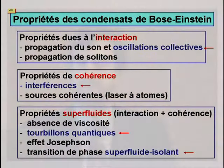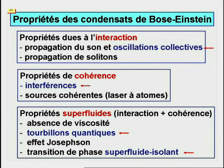Parmi les propriétés des condensats de Bose-Einstein, on peut identifier des phénomènes importants dus aux interactions, comme la propagation du son, les oscillations collectives, la propagation des solitons. D'autres phénomènes dépendent plus directement de la nature cohérente et ondulatoire de ce système. Je pense aux effets d'interférence et à la possibilité de réaliser des sources cohérentes d'atomes qui sont l'analogue du laser.